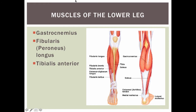Muscles of the lower leg include the gastrocnemius — your calf muscle, which means 'big belly.' The fibularis longus is on the outside, running along the fibula — the outside bone. And then the tibialis anterior runs along the anterior side of the tibia.